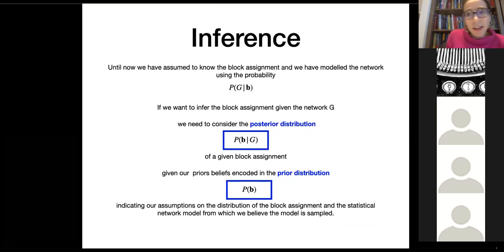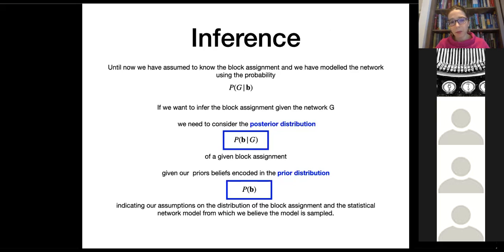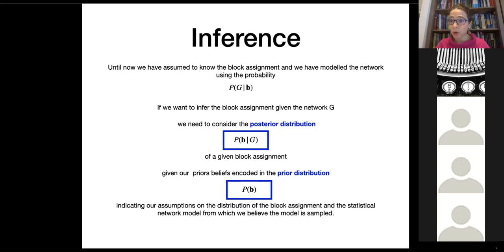In general, there are different ways to infer community structure in large networks. Since this is a computationally hard problem, the most used methods for very large networks are greedy algorithms like Louvain and Infomap, which we do not discuss here. But for medium and small size networks, one can do a very good job with Bayesian inference and modeling, and here we discuss this approach briefly.